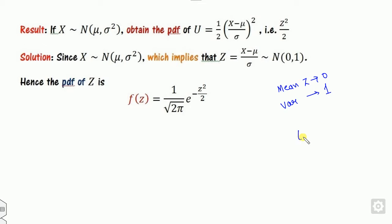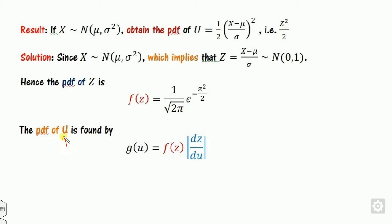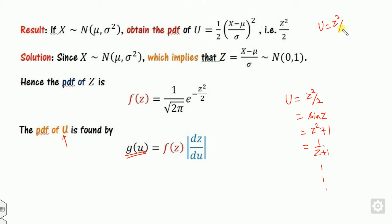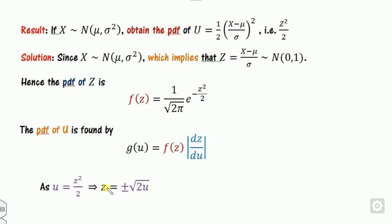We want to find the PDF of u, where u equals z squared over 2. The technique is: the PDF of u is g(u) = f(z) times |dz/du|. This rule allows you to find the PDF of any transformation — whether u equals z squared over 2, z cubed, z plus 1, or sine of z. First, express z in terms of u: from u = z²/2, we get z equals plus or minus the square root of 2u.